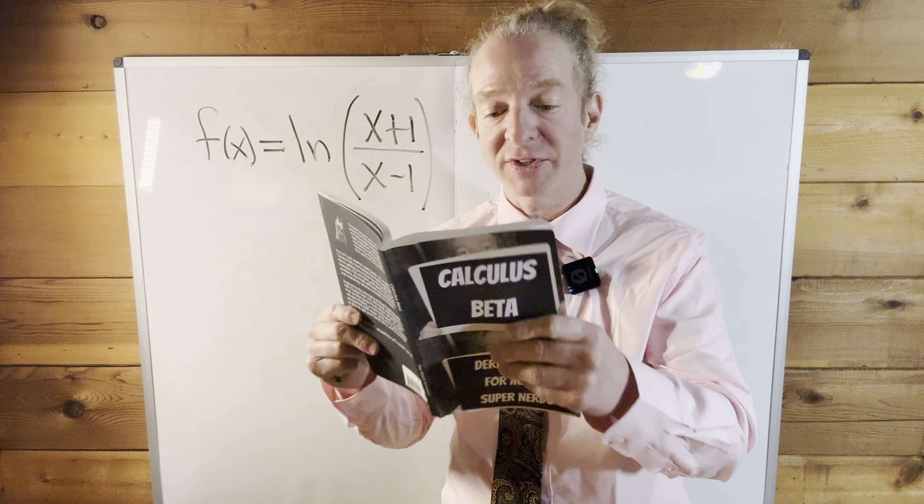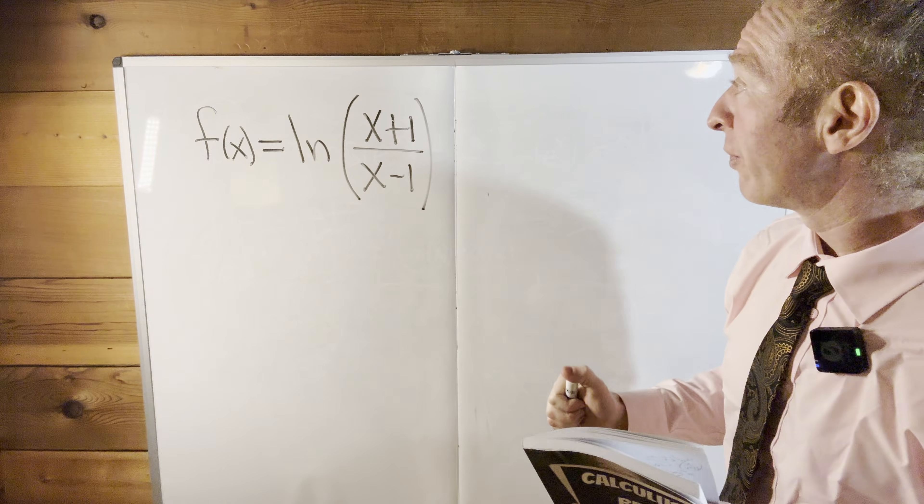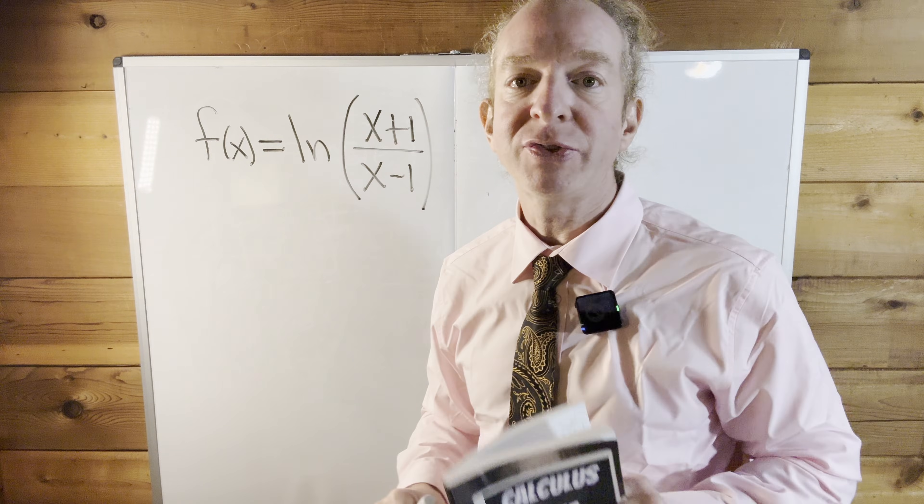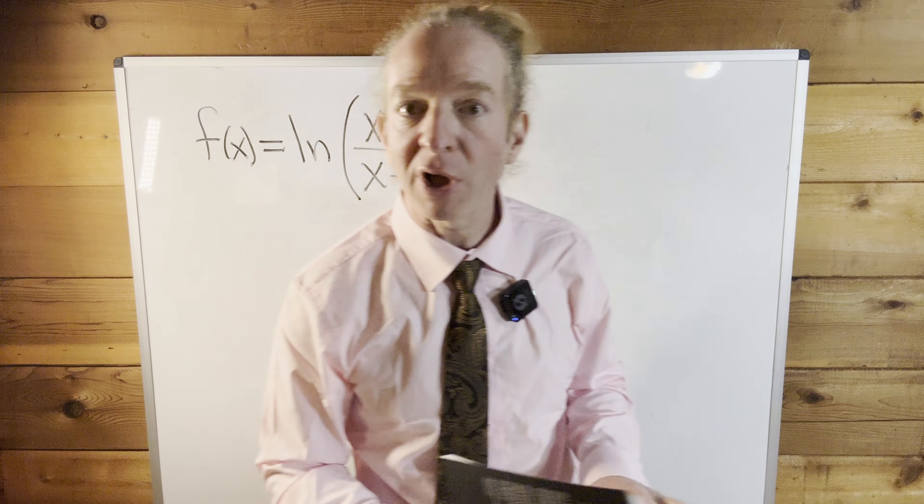And I have the solutions here. This is an example from my book, Calculus Beta. So in a problem like this, because we have the natural log of a quotient, what you want to do is first use what's called the quotient rule for logarithms.